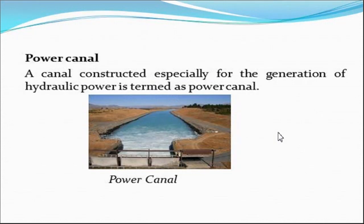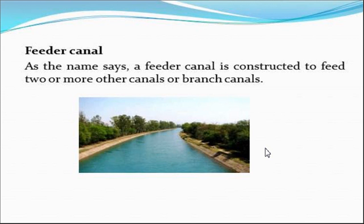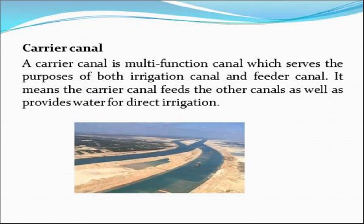A power canal is a type of canal constructed especially for the generation of hydropower. A feeder canal, as the name indicates, is used to feed two or more other canals or branch canals. A carrier canal is a multifunctional canal which serves the purpose of both irrigation as well as a feeder canal, working in both conditions.